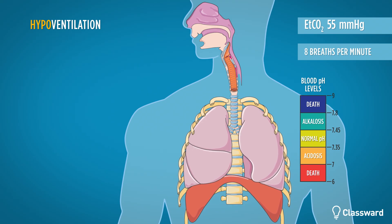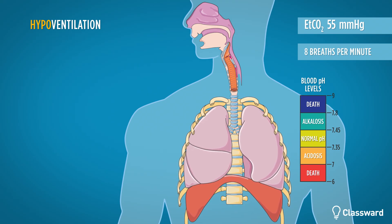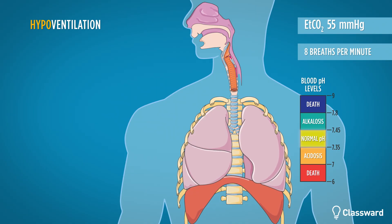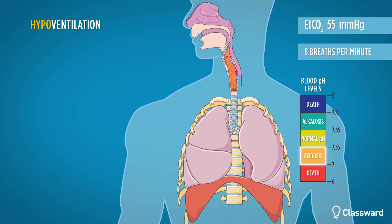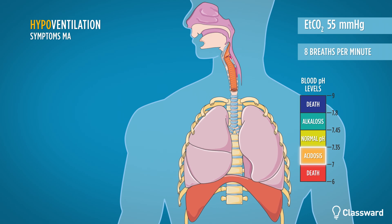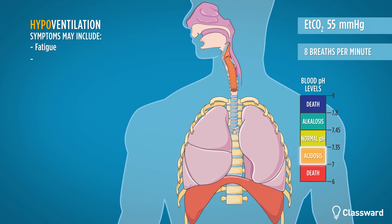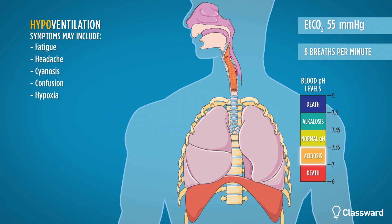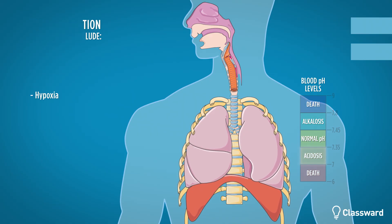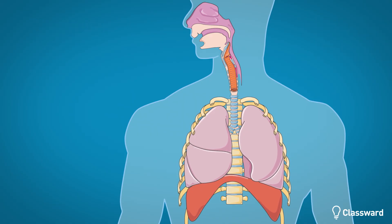Instead of blowing off carbon dioxide, hypoventilation causes the body to retain carbon dioxide. The buildup of CO2 causes the body's pH to fall, making it more acidotic. Symptoms may include fatigue, headache, cyanosis, confusion, and hypoxia.